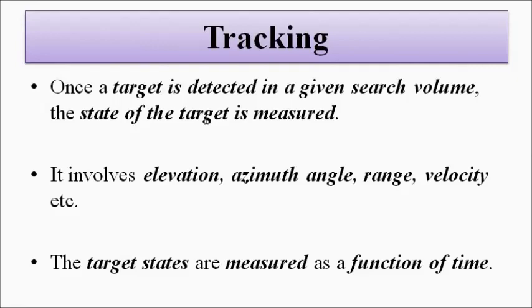Tracking is the second function, like the second step after search and detect. If the radar has to track a particular target's movement, its various features such as range, elevation, azimuth angle, Doppler shift, velocity—whatever feature it wants to measure and keep track of—after detecting the target in a particular search space, the various features it wants to measure are continuously monitored. It can be the range, elevation angle, azimuthal angle, Doppler shift, velocity measurement, whatever. It is continuously measured as a function of time.